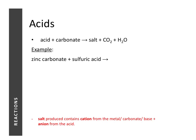The next reaction is acid plus carbonate giving salt, carbon dioxide, and water. Unlike the previous reaction where only certain metals react with acids, all carbonates can react with acids. When zinc carbonate reacts with sulfuric acid, the products are carbon dioxide, water, and a salt. Applying the rule: the cation comes from the carbonate — zinc — and the anion comes from the acid — sulfate — so the salt is zinc sulfate.